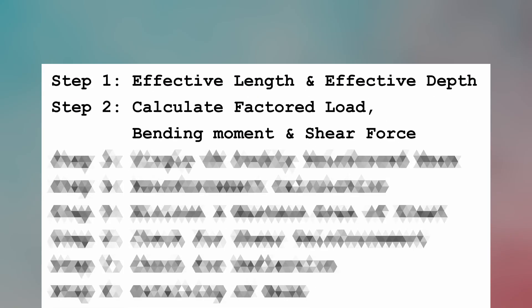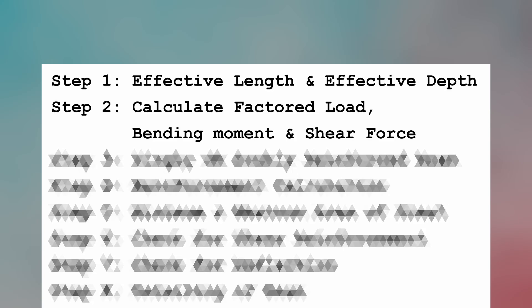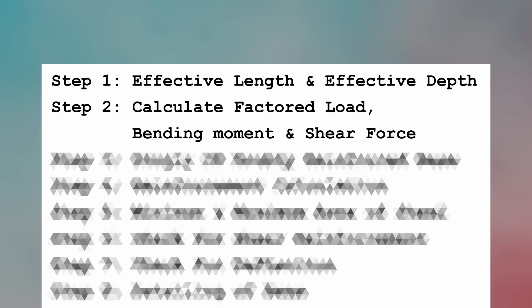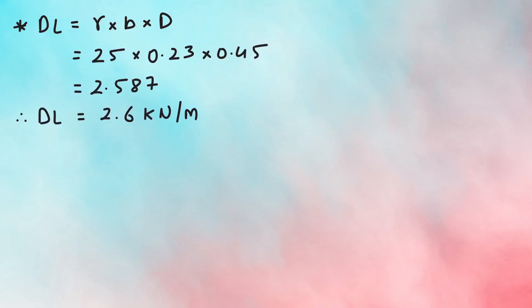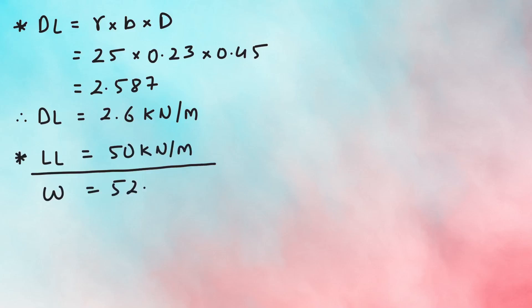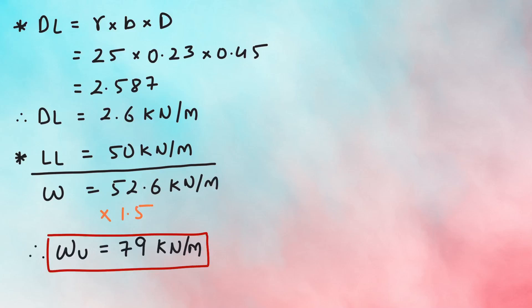Step 2 is calculating the factored load, moment, and shear force. Factored load will be the dead load — gamma into B into D — which equals 2.6, plus the imposed load of 50 kN per meter. Adding them gives a UDL of 52.6, and factoring it by 1.5 gives a factored load of 79 kN per meter.